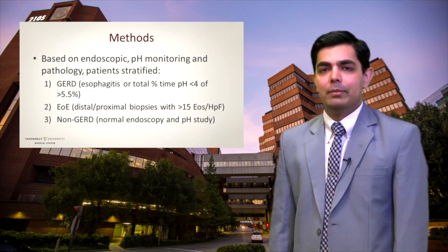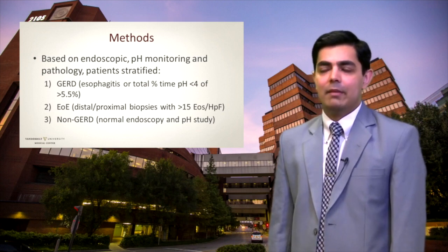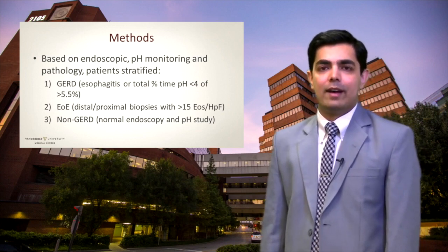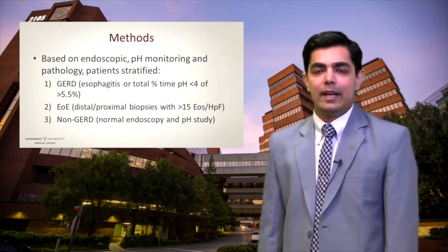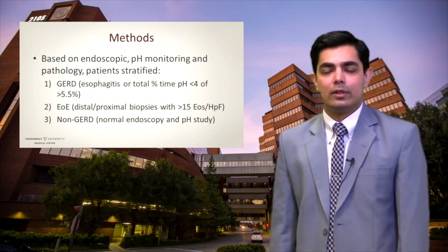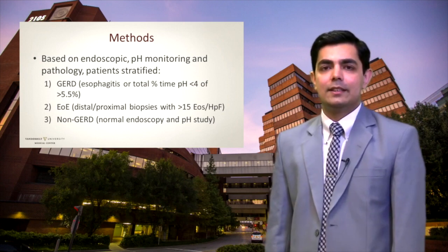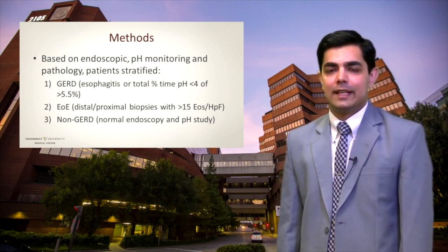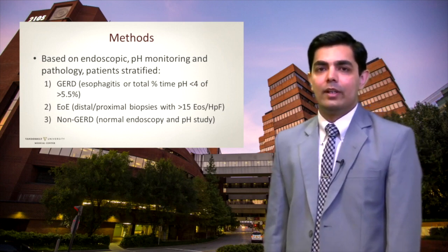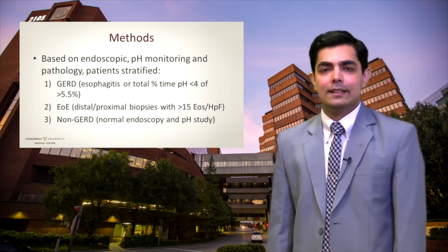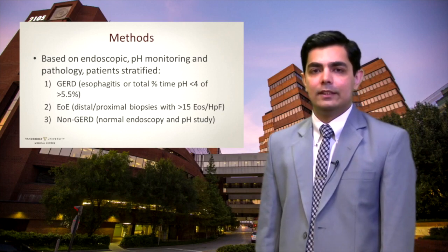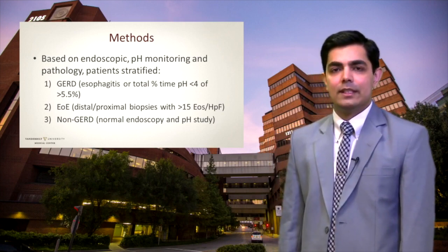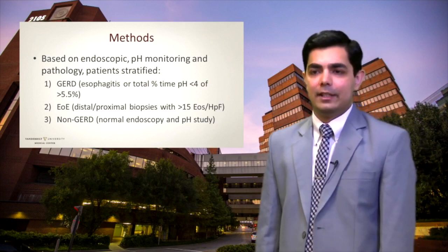Based on the endoscopic pH monitoring and pathology, the patients were stratified into three groups: GERD, which was based on endoscopic evidence of esophagitis or total percent time pH less than 4 of more than 5.5%; EOE, which was based on distal and proximal esophageal biopsies of greater than 15 eosinophils per high-power field; or non-GERD, which was either normal endoscopy and normal pH.